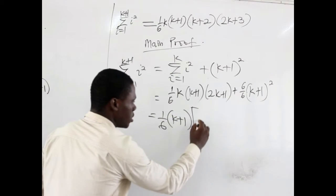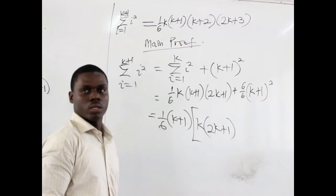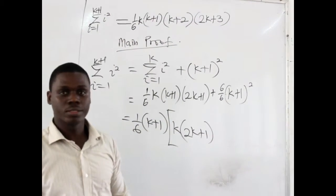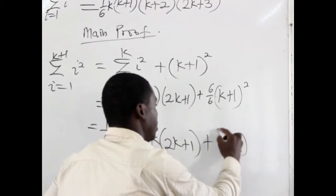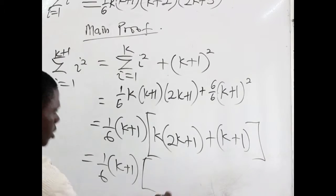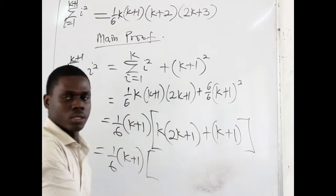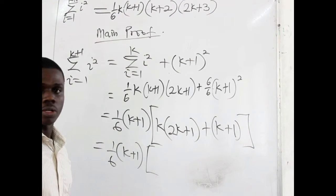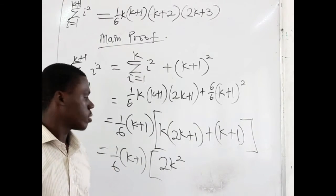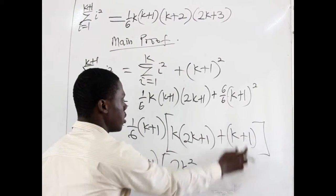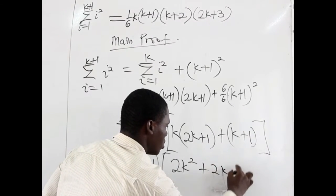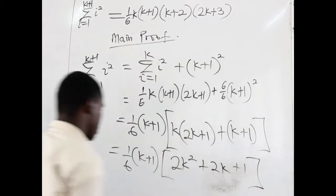After factoring out (1/6)(k+1), we are left with k(2k+1) from the first part. For the second part, (k+1) squared divided by (k+1) leaves (k+1). So inside the brackets we have k(2k+1) + 6(k+1). Expanding: k times 2k gives 2k squared, k times 1 gives k, so k(2k+1) = 2k² + k. And 6(k+1) = 6k + 6. Combining: 2k² + k + 6k + 6 = 2k² + 7k + 6, which factors as (k+2)(2k+3).